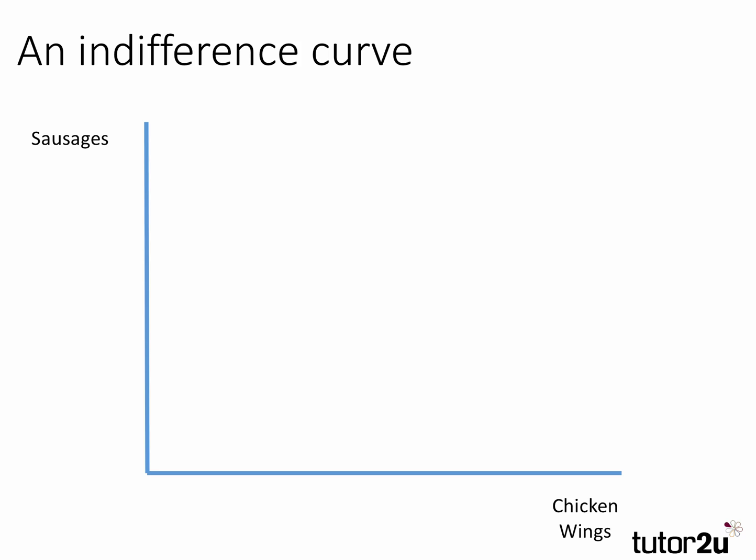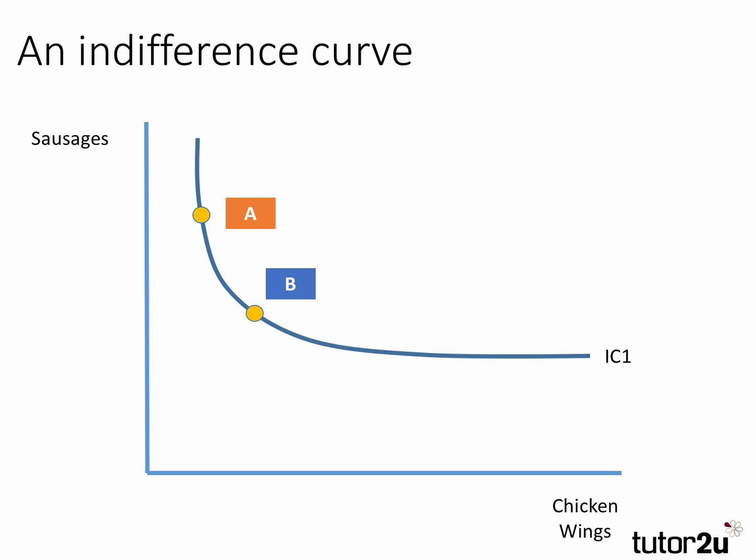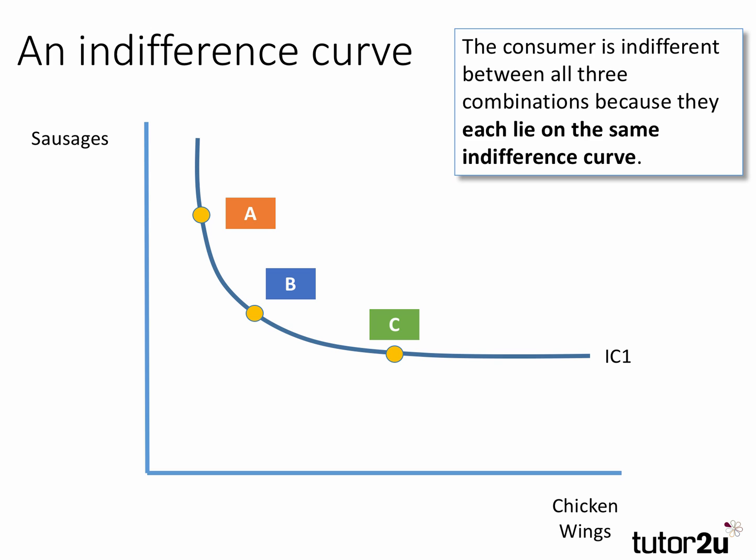We normally work in an XY space. Let's consider, for example, a choice the consumer might have between consuming sausages and chicken wings. Here's an indifference curve IC1. Any combination that lies on the curve — A, B, C — any of those combinations is assumed to leave the consumer indifferent. They lie on the same curve; we're assuming the total utility stays the same, and we've drawn the indifference curve as convex to the origin.